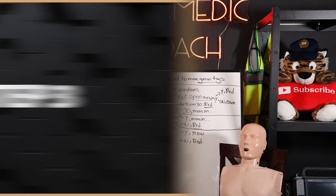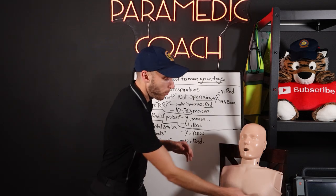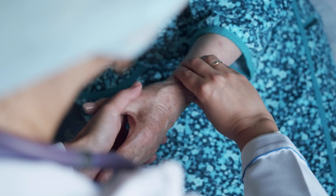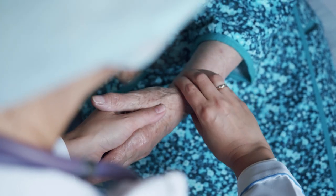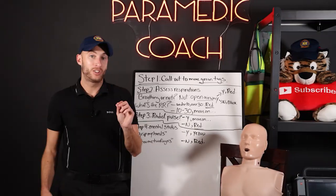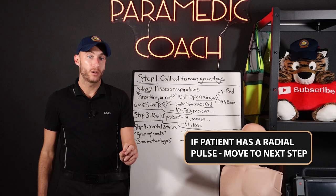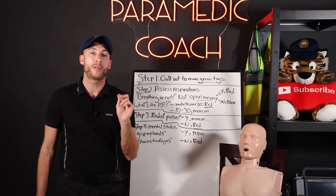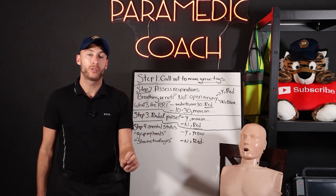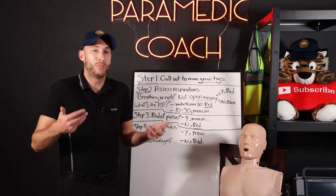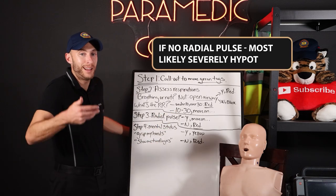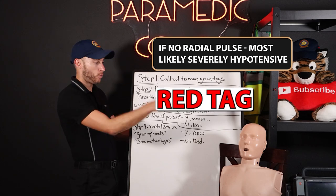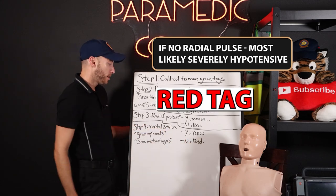Step three: I'm going to get the patient's radial pulse. Do they have a radial pulse? If yes, move on. If they don't have a radial pulse, that means the patient is most likely severely hypotensive — mark the patient red.